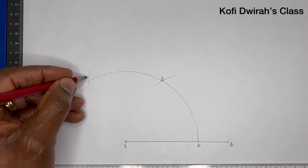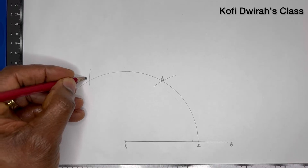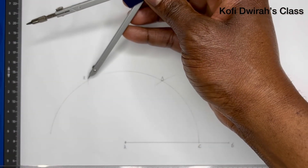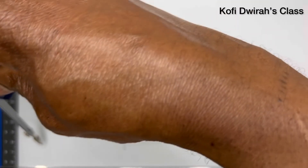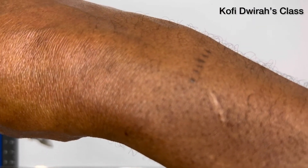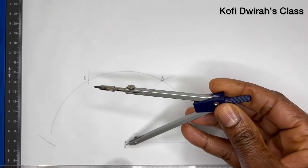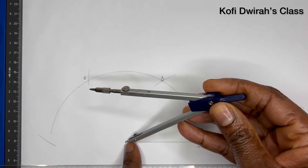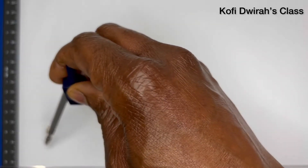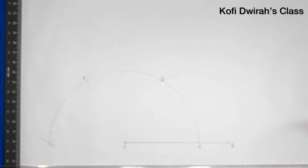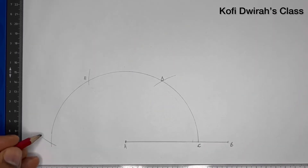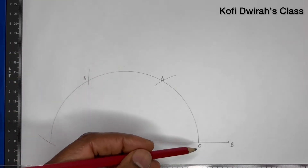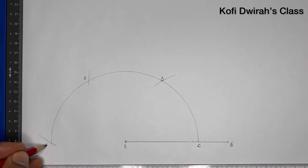Then at point E, you draw another arc. We need to extend this arc — it is the same radius — so we extend this arc like this. So we have points A, B, C, D, E, and this point here is F.